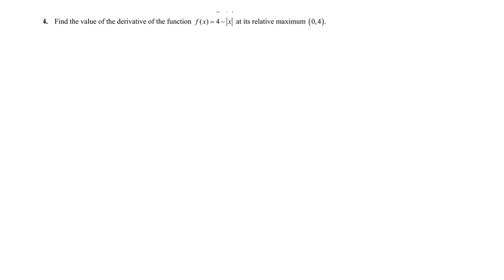Problem 4: find the value of the derivative of the function f(x) = 4 minus absolute value of x at its relative maximum. The relative maximum is at the point x equals 0, y equals 4.